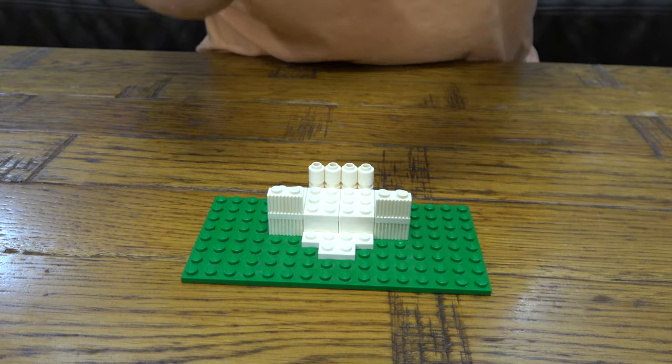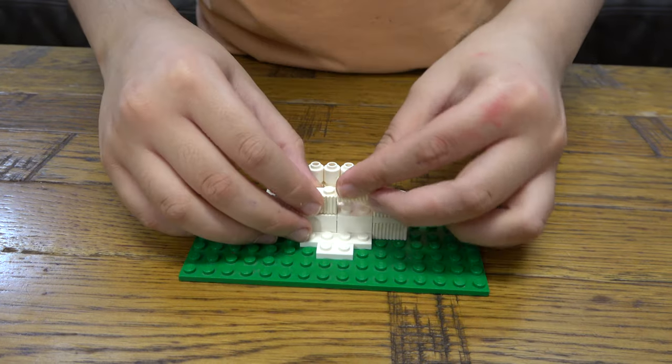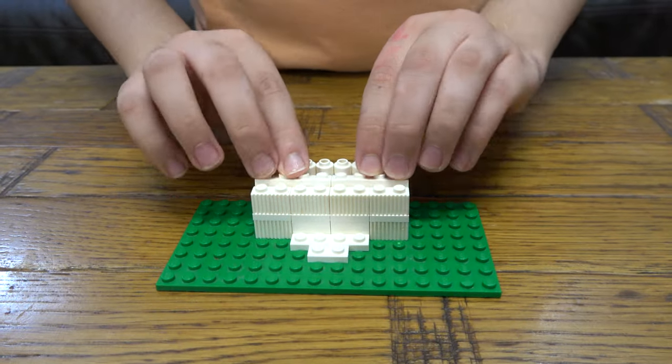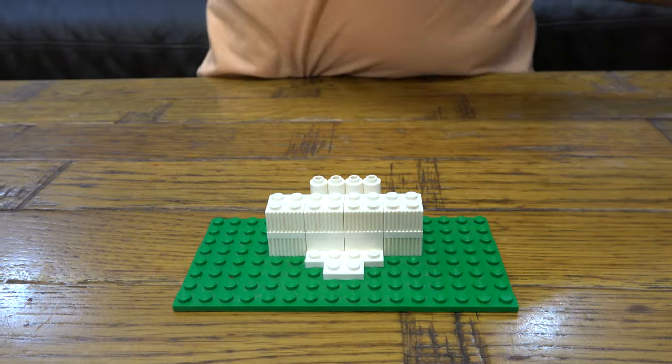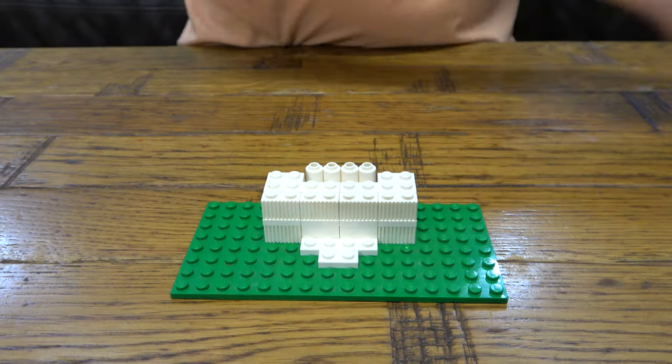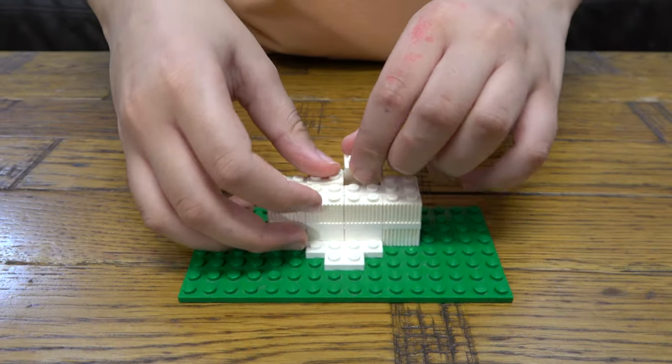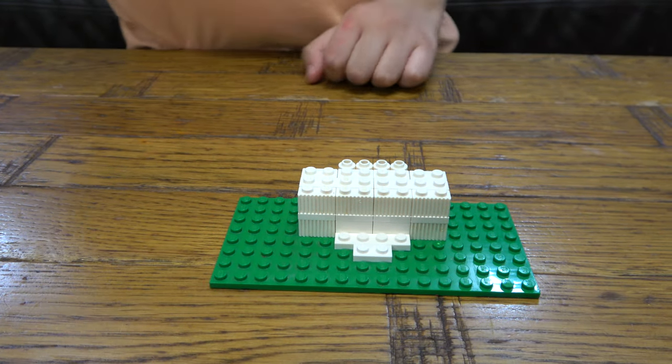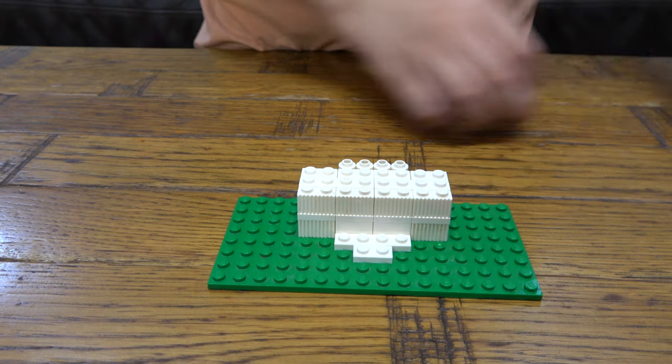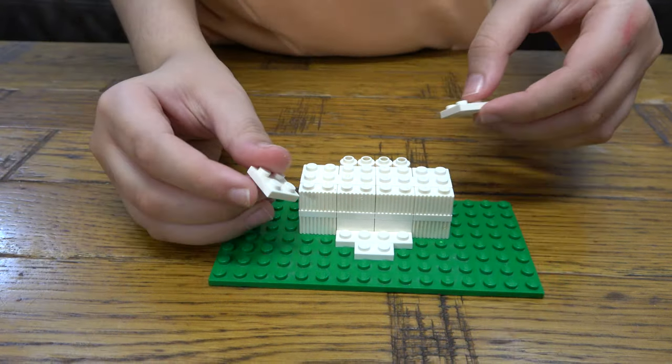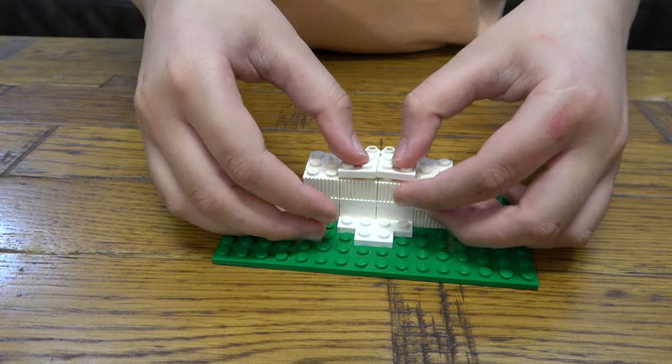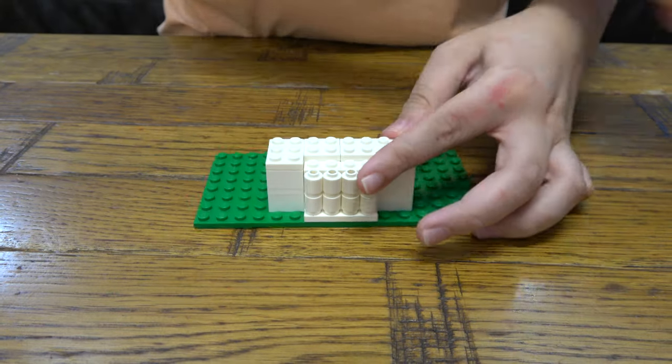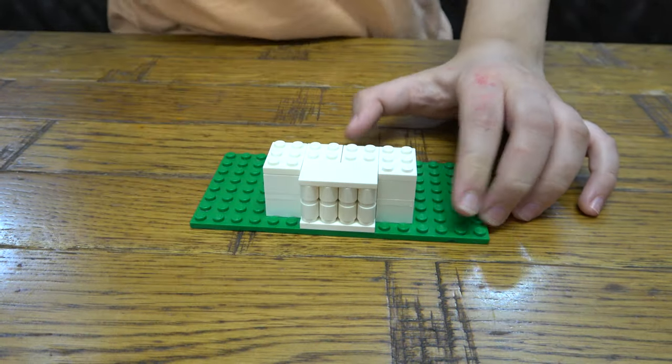Now we're just going to get these and place them on like that. And then next, we are going to place two of these here. And here, we're going to place a flat like so.